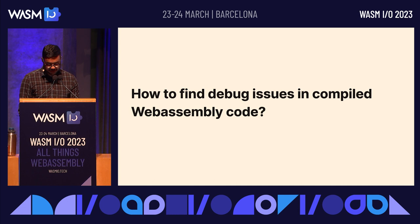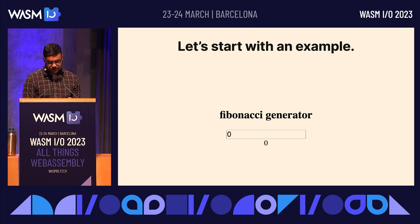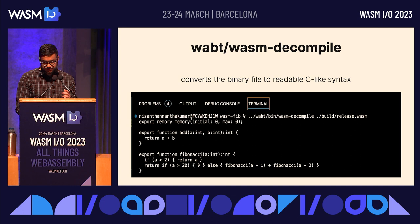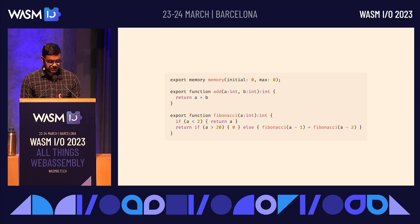I want to go into an example of how we can debug issues with compiled WebAssembly when we don't have access to the source code. I built a small application that returns the Fibonacci sequence — the calculations are offloaded to a WASM function we don't have the source to. As we can see, the moment we hit 21, it's returning a zero. So something's going wrong. The first thing we can do is use the WASM decompile tool to decompile the WASM module into a readable C-like syntax. Looking closer at the output, the suspicious line is: if A is greater than 20, it returns zero.